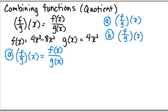So now, all I'm going to do is in place of f of x here, I'm going to fill in what my f of x is equal to, which in this case is 4x cubed minus 8x squared. And in my denominator, I'm going to fill in what g of x is equal to, which in this case is 4x squared.